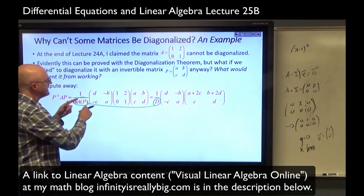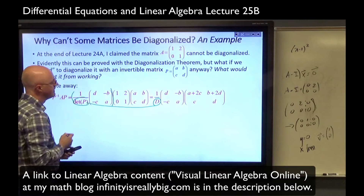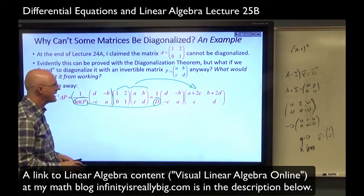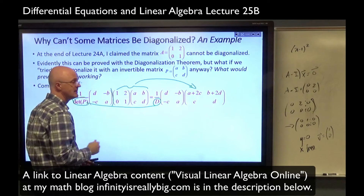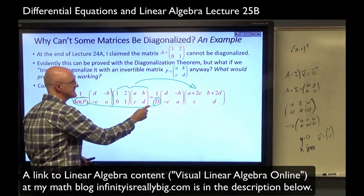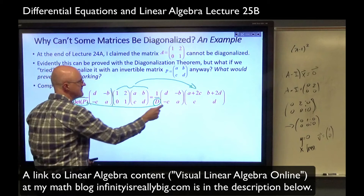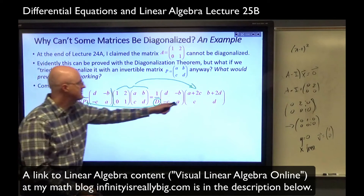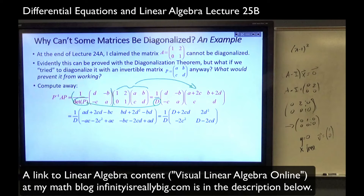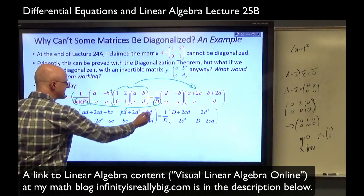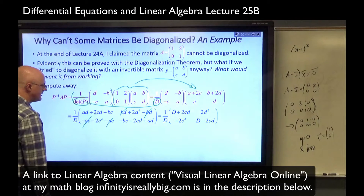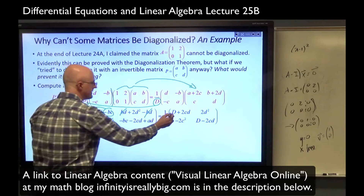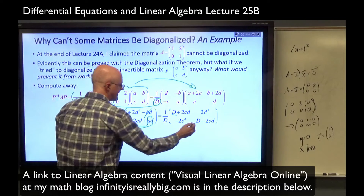Then compute P inverse times A times P. Multiply the first two matrices: 1·A + 2·C in the upper left, 1·B + 2·D in the upper right, C in the lower left, D in the lower right. Now multiply those two matrices together. You get a result where the BD terms cancel and the AC terms cancel. You can rearrange and combine AD minus BC, written as capital D, to simplify. When would this be a diagonal matrix? It would be diagonal if and only if the off-diagonal entries are both zero.